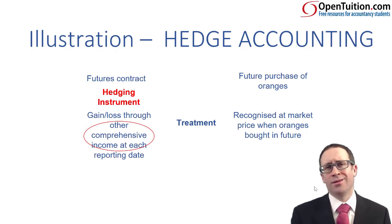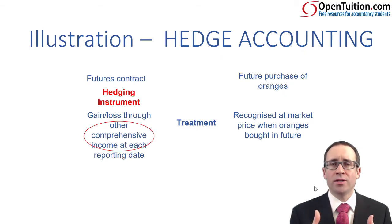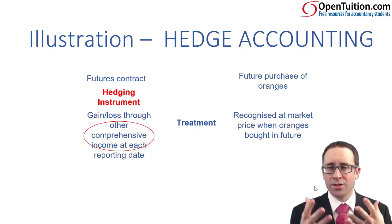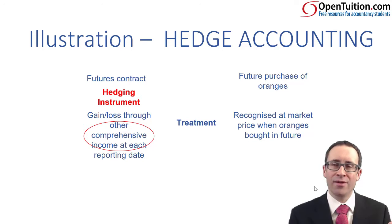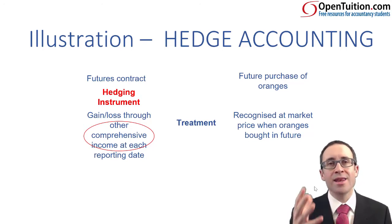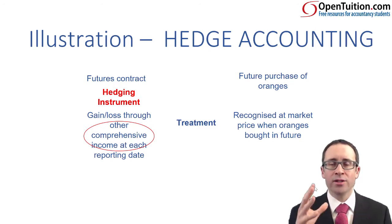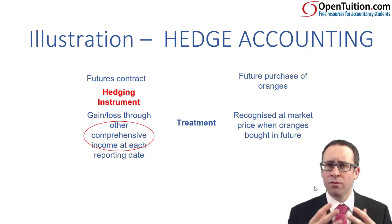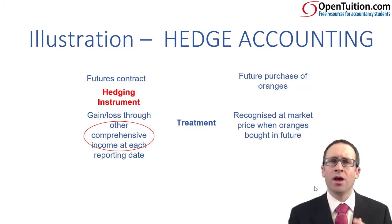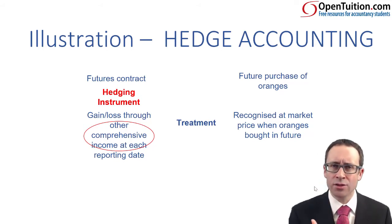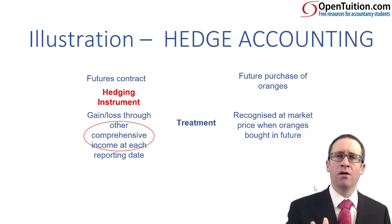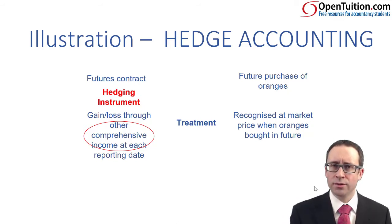We placed a bet on a price rise. If the price goes up, our bet is correct — it is winning and we have a gain. That gain now goes through OCI. We placed that bet on a price rise. If the price goes down, then we've lost our bet and we have a loss. That loss now goes through OCI because the hedging instrument — the futures contract — is part of a cash flow hedge. These are the rules of hedge accounting.